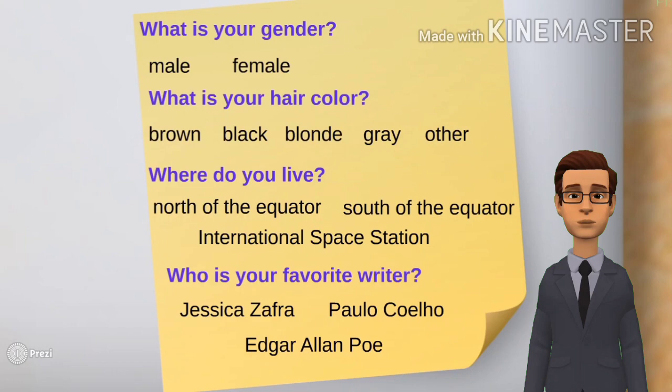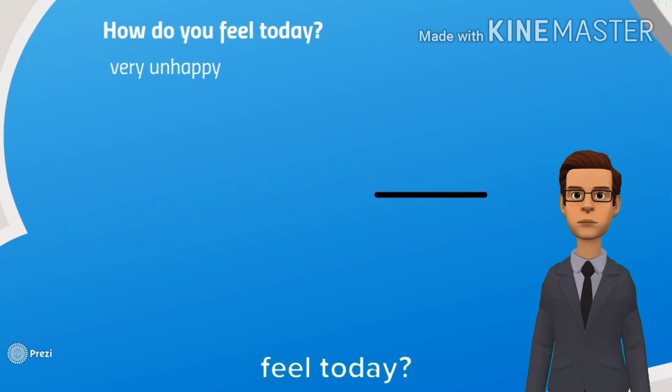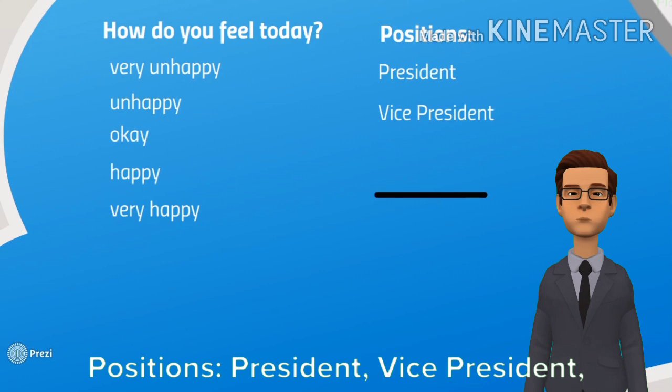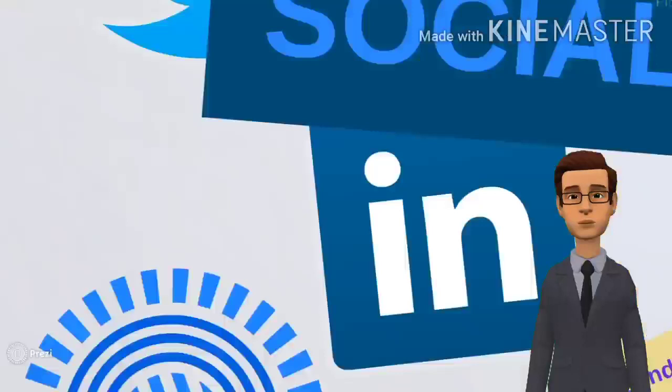Ordinal variable can be remembered as order. For example, how do you feel today? Very unhappy, unhappy, okay, happy, or very happy. Positions: President, Vice President, Secretary, or One-Star General, Two-Star General, or Three-Star General.